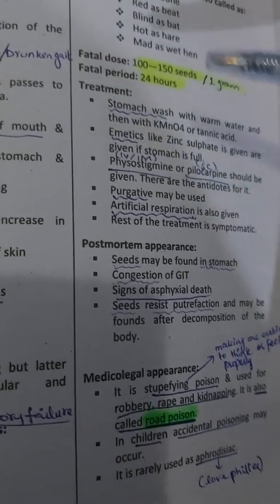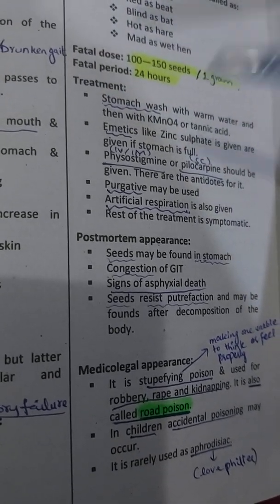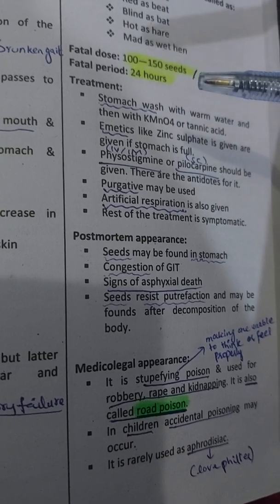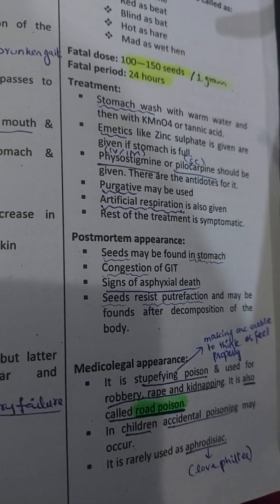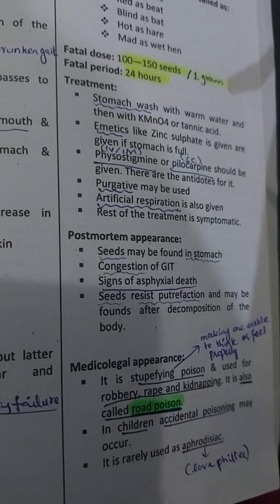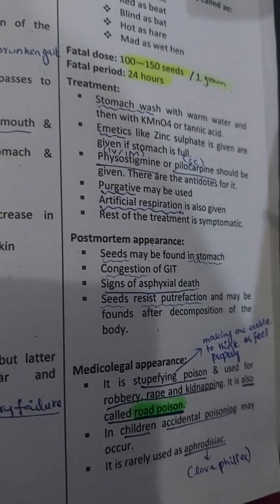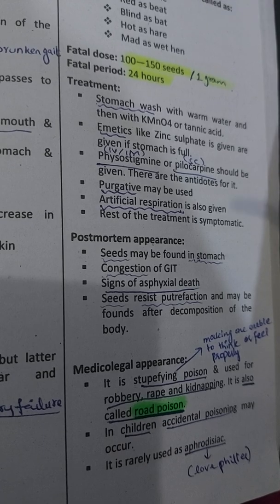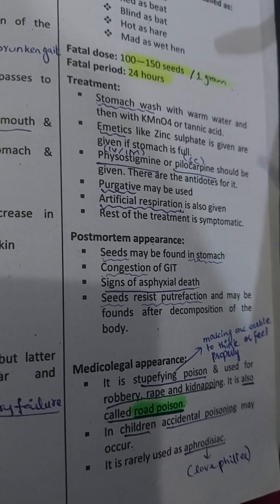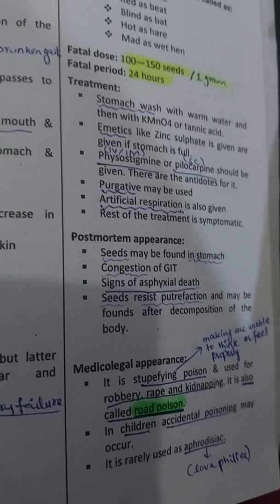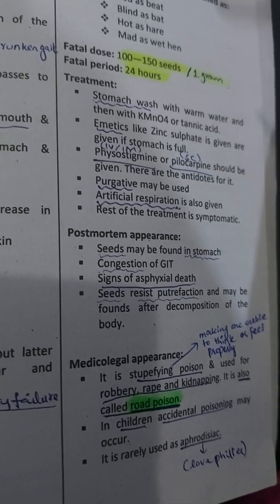For treatment: perform stomach wash — gastric lavage with warm water and potassium permanganate. Tannic acid can also be used as an antidote.